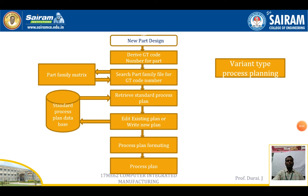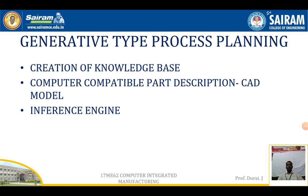The next type is generative type process planning. In generative type process planning, there are three components: first, creation of a knowledge base; second, a computer-compatible part description or CAD model; and third, an inference engine that automatically creates the process plan. There is no human interference in generative type process planning. It is also called an expert system.